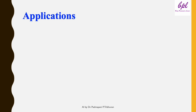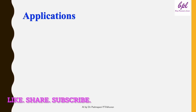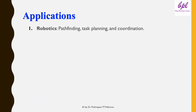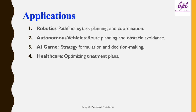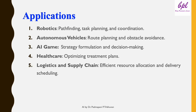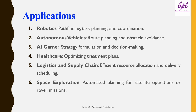AI planning is everywhere — from robots navigating complex spaces to autonomous cars deciding the best route. It's also crucial in logistics, healthcare, video games, and space exploration. In robotics, it is used for pathfinding, task planning, and coordination. In autonomous vehicles, for route planning and obstacle avoidance. In AI games, for strategy formulation and decision making. In healthcare, for optimizing treatment plans. In logistics and supply chain, for efficient resource allocation and delivery scheduling. In space exploration, for automated planning for satellite operations or rover missions.